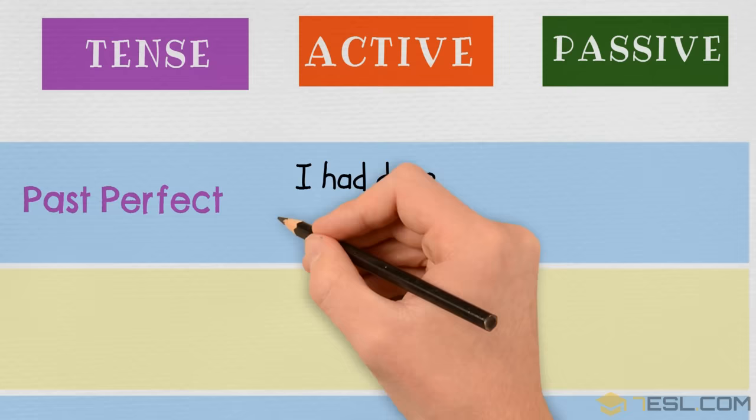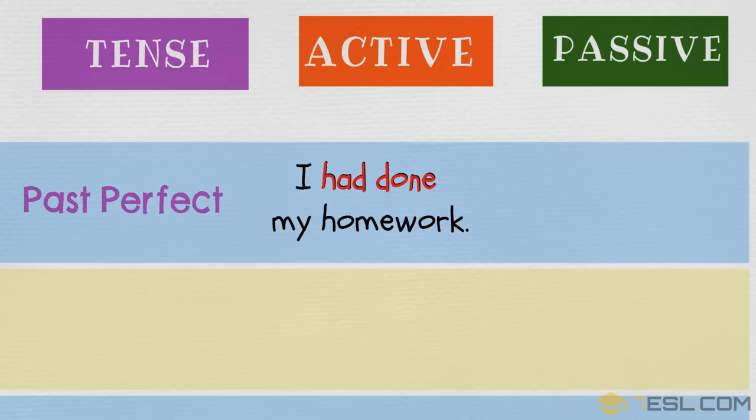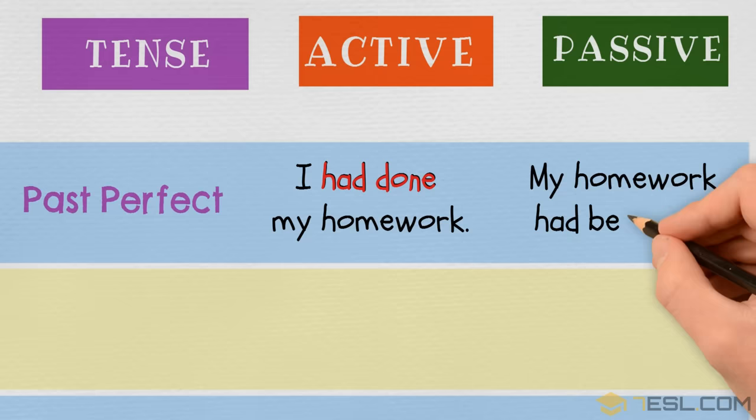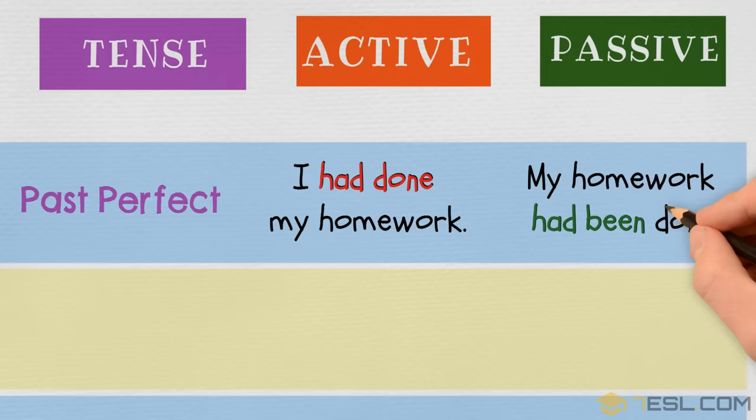Past perfect. Active: I had done my homework. Passive: My homework had been done.